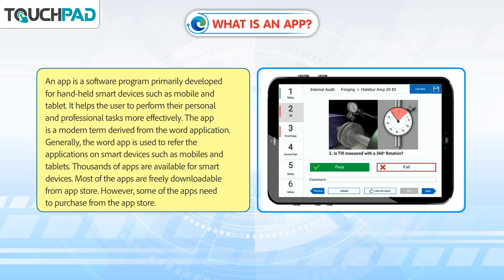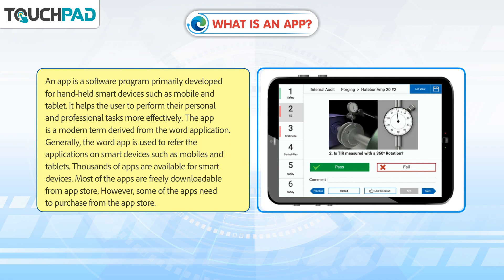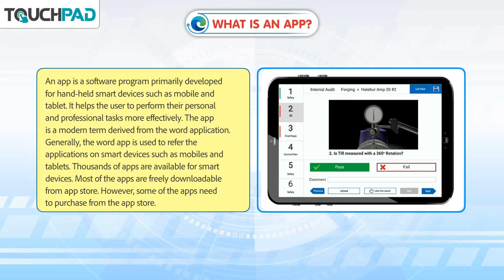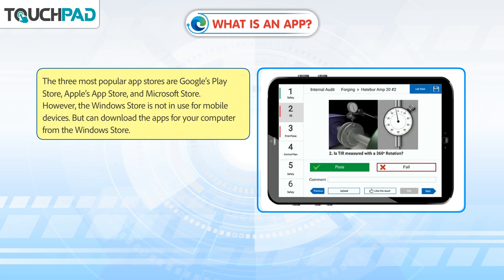Thousands of apps are available for smart devices. Most of the apps are freely downloadable from the App Store. However, some of the apps need to be purchased from the App Store. The three most popular app stores are Google's Play Store, Apple's App Store, and Microsoft Store.